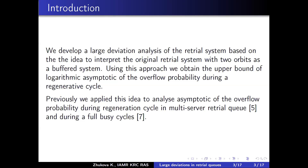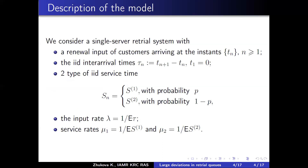A short description of the model and notation: we consider a single server retrial system with two orbits, with i.i.d. inter-arrival times and two types of service time. A customer can be one of two types or classes, and with probability p the service time is S1, or S2 with probability 1 minus p. We introduce the input rate lambda and service rates mu1 and mu2 for each type.